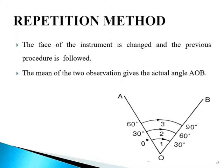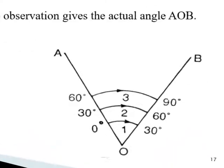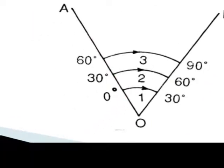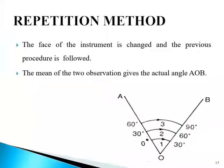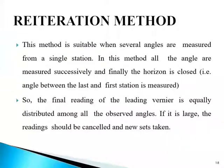The face of the instrument is changed and the previous procedure is followed — we have to measure the angles in both face left and face right. The mean of the two observations gives the actual angle AOB, which is the required result.